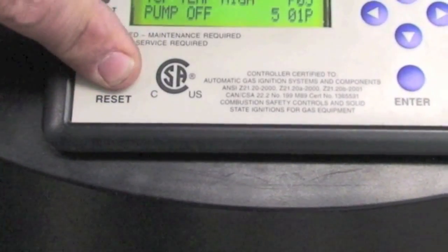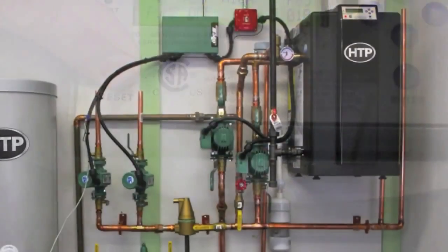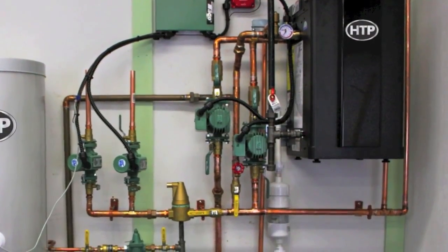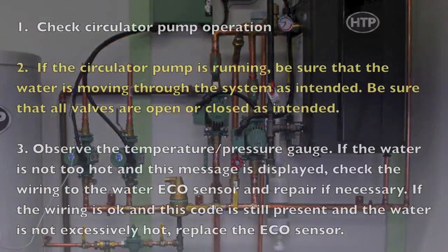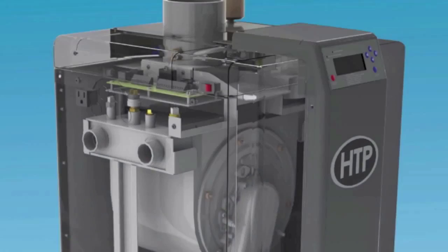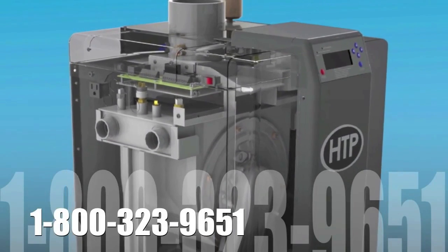Second, if you press the reset key and the heater operates, monitor the operation of the boiler and make sure the circulation pumps and zone valves are operating correctly and the boiler is getting proper flow. If the boiler circulating pumps or zone valves are bad, replace and put the boiler back in operation.